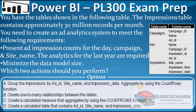The first requirement is to present ad impression counts by day, campaign, and site name, with analytics for the last year required. The second requirement is to minimize the data model size. In the exhibit we can see three tables: campaigns, ads, and impressions. The campaigns table has campaign ID and name, making it a dimension table. The ads table has ad ID, campaign ID, and ad name — also a dimension table. The impressions table has impression ID, impression date and time, and a reference to the ad, making it the fact table with millions of records.